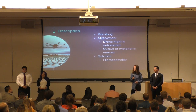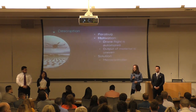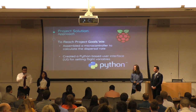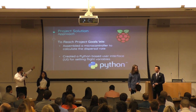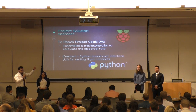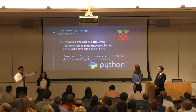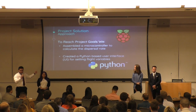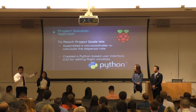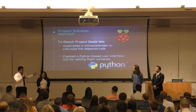Our solution was to develop a Raspberry Pi microcontroller that would regulate the speed of this dispersal. The solution is broken into two main components: first, the microcontroller controlling the dispersal rate given some variables inputted from the second phase. The second phase involves a user interface designed to be simple and intuitive for any client to input their flight values easily.